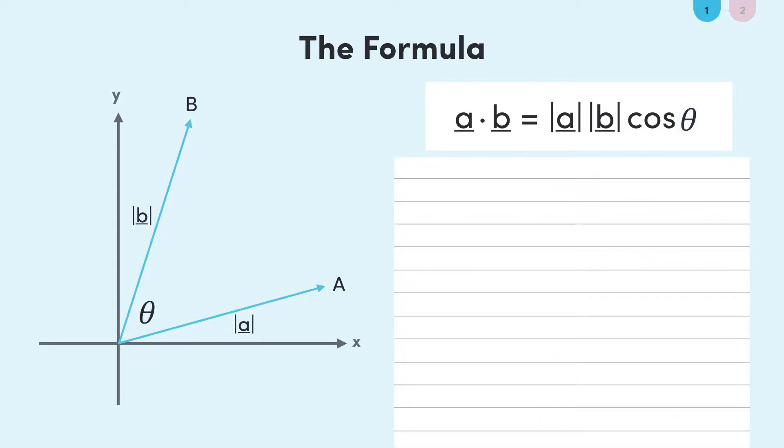How do we do this? You can first divide by this quantity here. We can assume that this will not be zero, because that would mean either a or b has a magnitude of zero and we're not interested in that case. We have cos theta on its own, so to go one step further, we can take the inverse cosine.